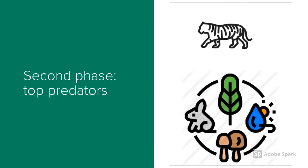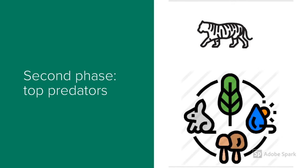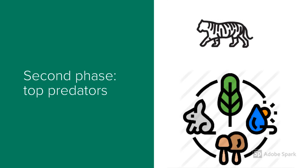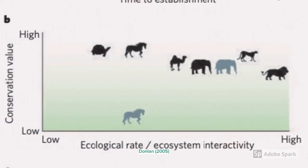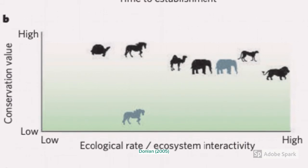Once the Pleistocene ecosystems are brought back and stable enough, we need to manage them. Donlan argues in a second phase for the reintroduction of top predators. These keystone species can affect entire food chains and therefore ecosystem structure and process. Populations regulated by predators are less vulnerable to climate change than those regulated by food availability or direct climatic factors. Due to their ecological role and interactivity with other species, big predators like cheetahs and lions would not only strengthen the ecosystem but also increase biodiversity.